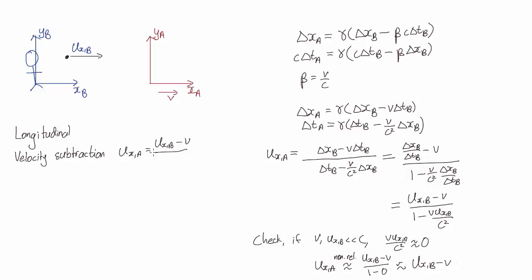Longitudinal just means Alice's velocity is in the same axis as the rock's velocity. They're both along the x-axis. And it's velocity subtraction because Alice is moving away from it.